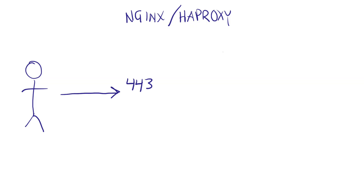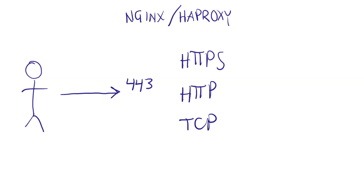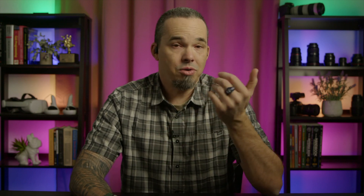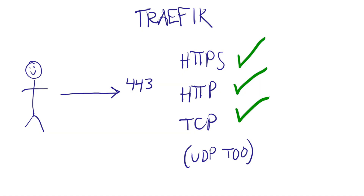Most ingress controllers lock the port to the protocol. If you're using port 443 for HTTPS, then you can only use it for HTTPS. That's not true with Traefik — you can use port 443 for whatever you want: HTTP, TCP, or HTTPS, all at the same time.